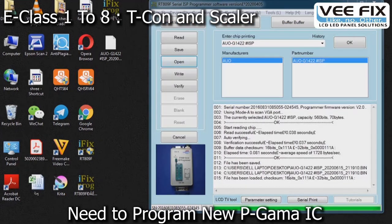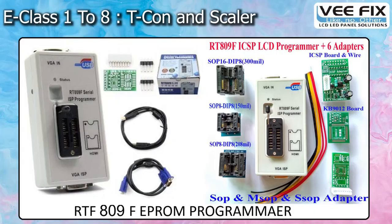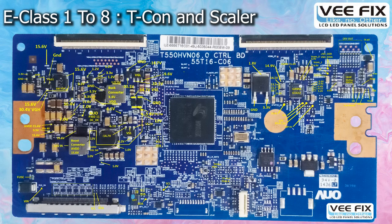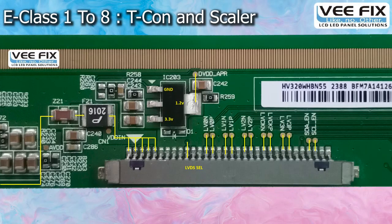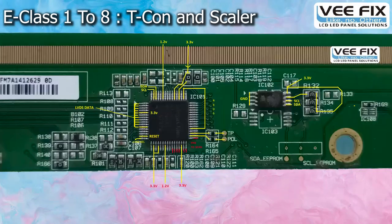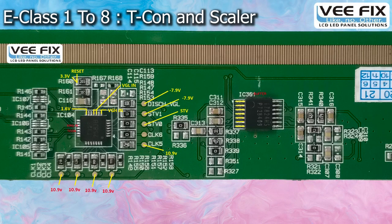If you are replacing a programmable gamma IC or a programmable DC to DC IC, you have to flash the new IC — meaning you have to reprogram it using an EEPROM programmer. We will show live hands-on practicals for reprogramming gamma IC and DC to DC IC in our E-class number 7. After finishing this department of DC to DC IC, T-con IC, Gamma IC, and Scan Drive IC, we will show you different types of most commonly used T-con boards as well as the scalar PCB, and discuss and demonstrate the most running models of these ICs.